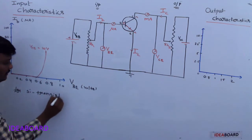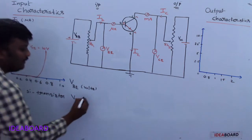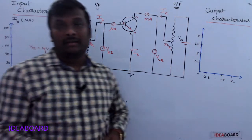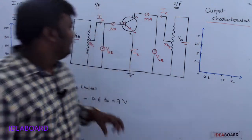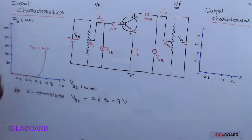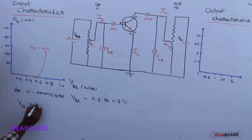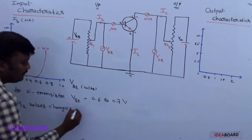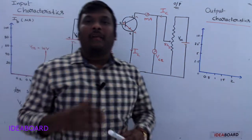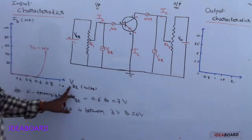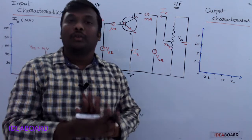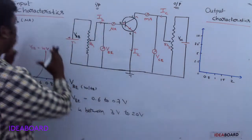For a silicon transistor, the VBE value is 0.6 to 0.7 volts. This means the microammeter shows a reading only when VBE exceeds 0.6 volts; below that, no current flows. The VCE values for silicon transistor range between 3 volts and 20 volts — these are standard values confirmed through many practical experiments.